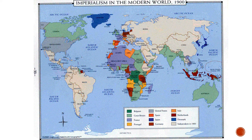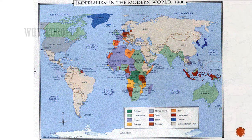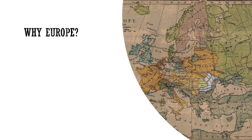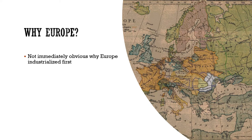Nearly every European country by the year 1900 had begun to build some form of world empire. The areas of the world particularly impacted by European imperialism were Africa and Asia. So you might be wondering — why Europe? Why was Europe the first area of the world to industrialize? It's not immediately obvious why it had to be Europe. There were several other areas of the world that had made major technological advances, such as China, India, and the Middle East, that we might have imagined moving into industrialization. However, it was Europe that was first.